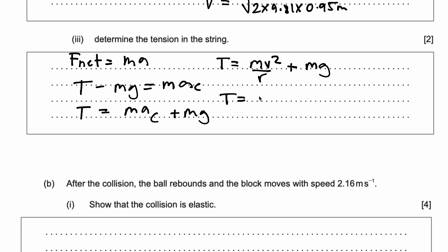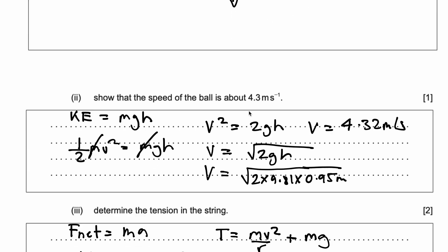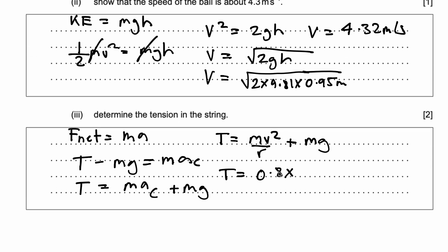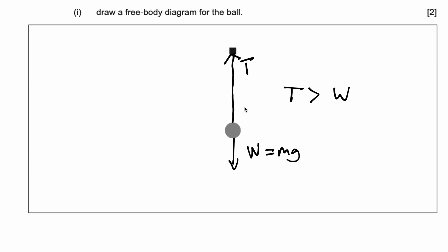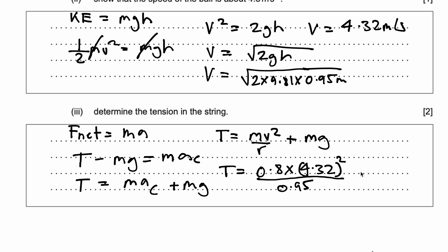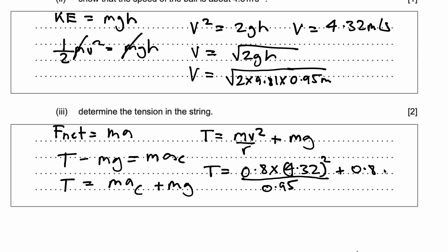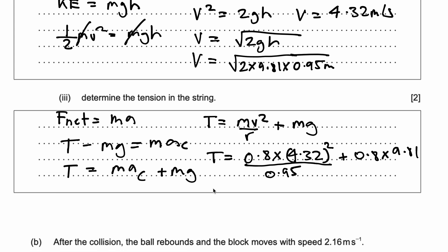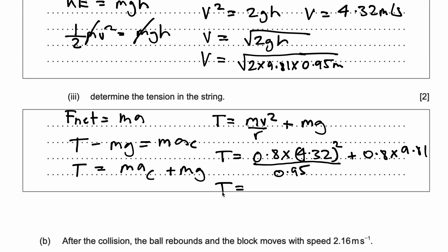Putting in all the relevant numbers: the mass of the ball is 0.8 kg, 0.8 times the velocity we calculated, 4.32 squared, divided by the radius 0.95, plus 0.8 times 9.81. Putting this on my calculator, the tension comes out to be 23.56 newtons. You could round this up to 24, but I'll keep it as 23.56 newtons. That's the tension in the string.